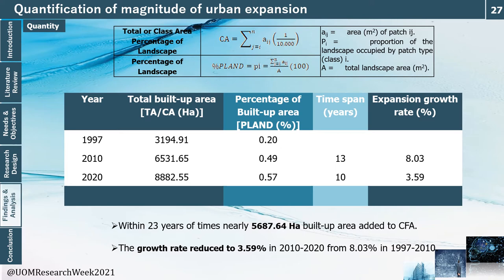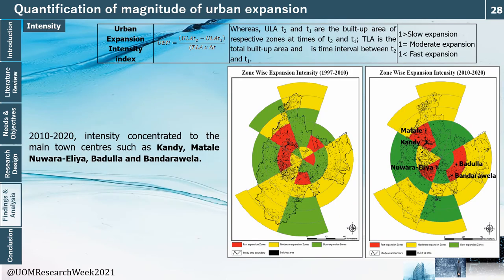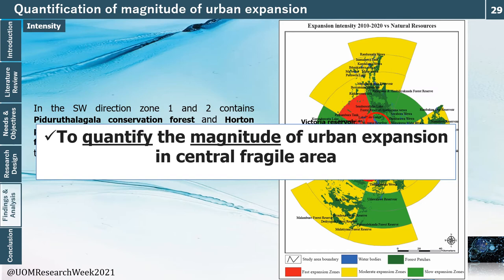Comparing 1997–2010 to 2010–2020, the growth rate reduced to 3.59 in the later period. However, since expansion is still occurring, the analysis identified which zones have high expansion using intensity. Intensity was categorized into fast, moderate, and slow expansion zones. In 1997–2010, fast expansion zones were spread across the area, but in 2010–2020 they became concentrated around main town centers such as Kandy, Matale, Nuwara Eliya, Badulla, and Bandarawela — possibly due to the National Physical Planning Department guidelines introduced in 2011. However, critical natural resources like Pedro, Dalgala, Horton Plains, and Victoria Reservoir are located within these fast expansion zones.